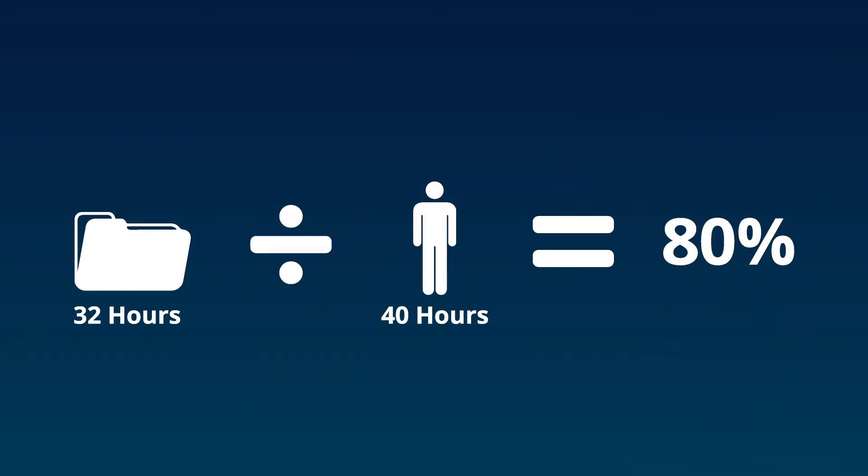For example, a senior engineer is assigned to 32 hours of work across four projects during one week. That same engineer during that week has 40 hours of capacity to give. This means that the engineer is 80% utilized.